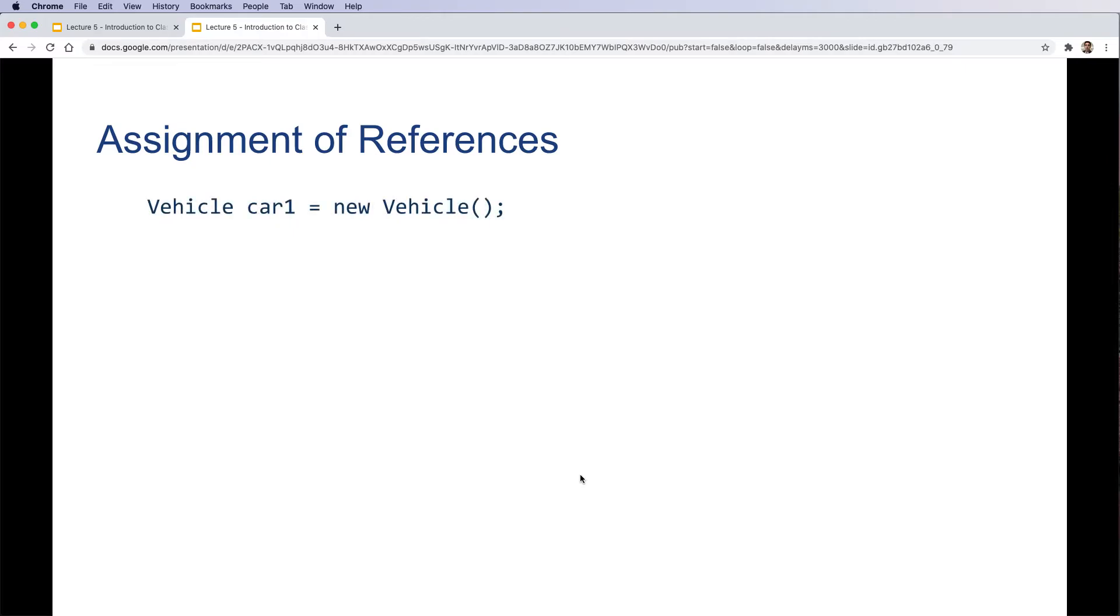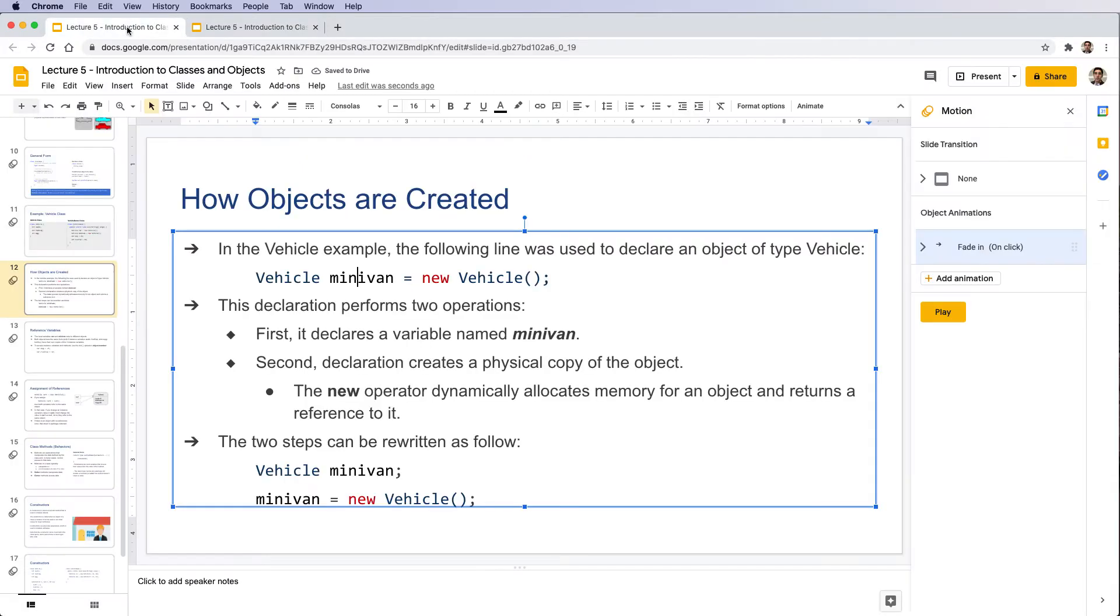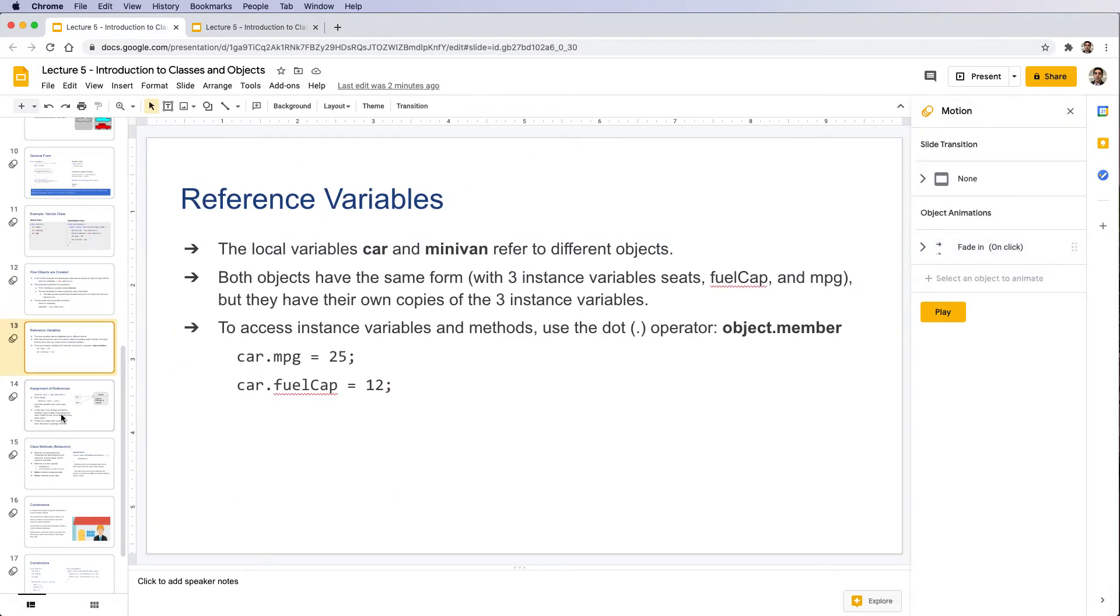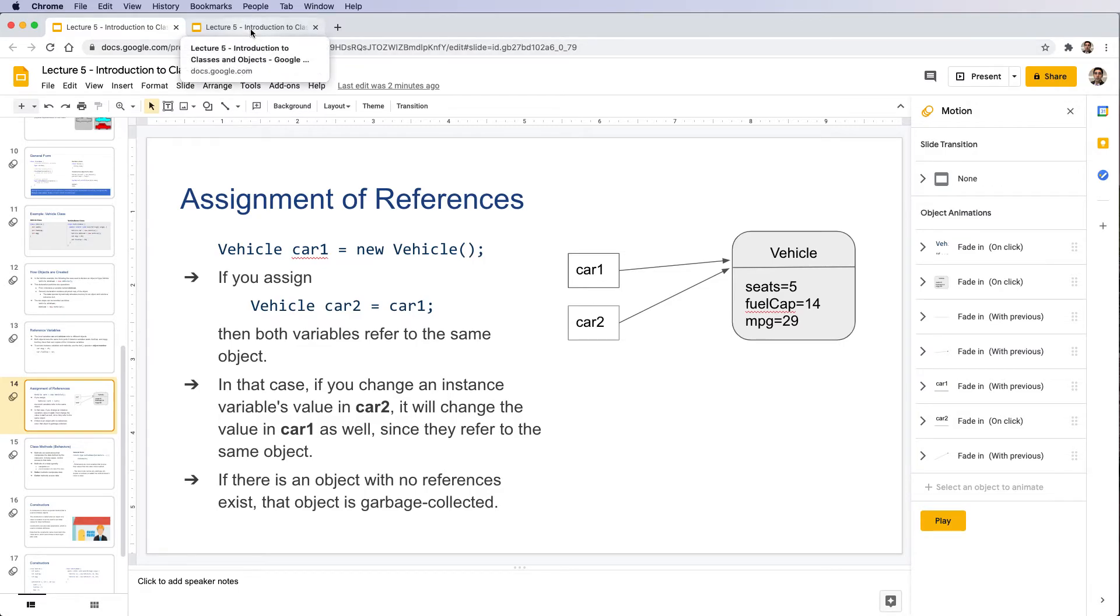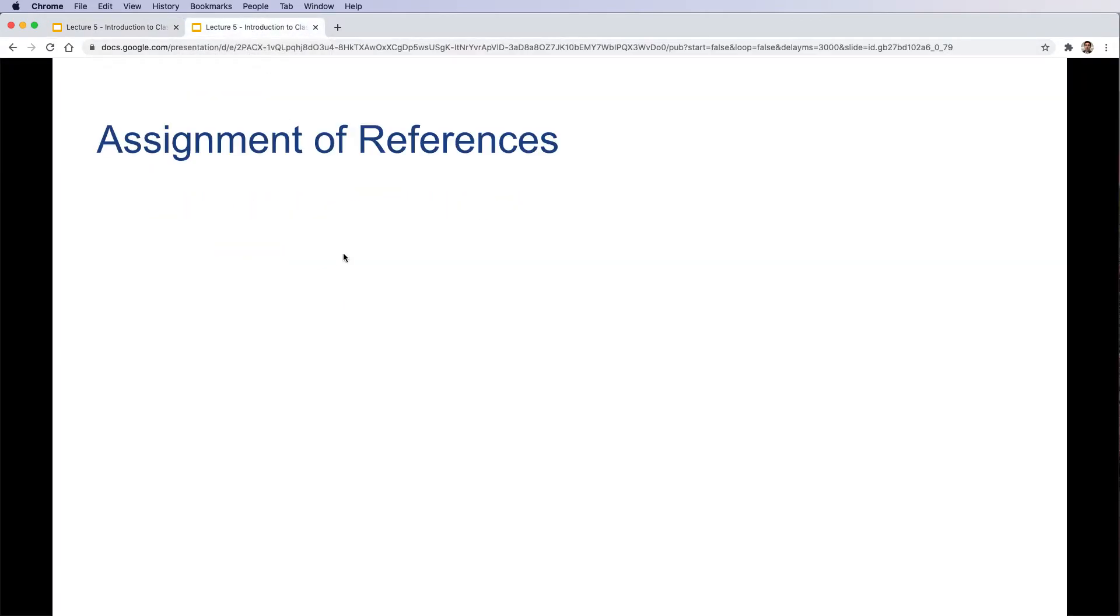Assignment of references: Vehicle car1 equals new Vehicle. If you create car2 and assign car1 to car2, what really happens here is that both variables refer to the same object. In that case, if you change an instance variable's value in car2, it will change the value in car1 as well, since they refer to the same object.